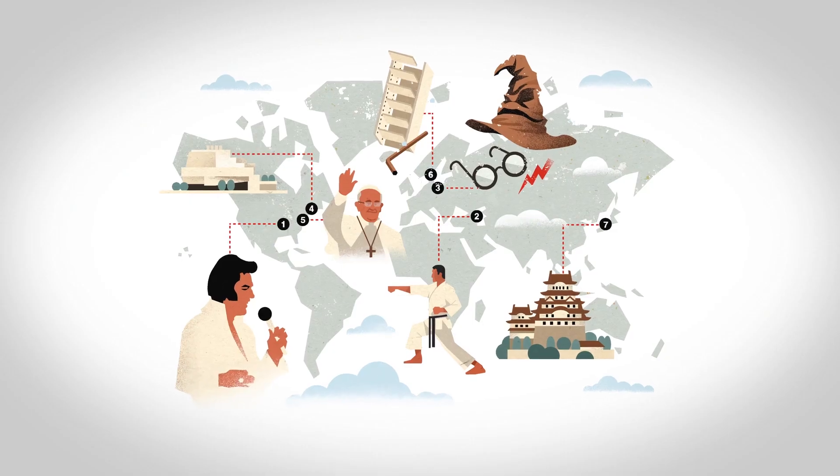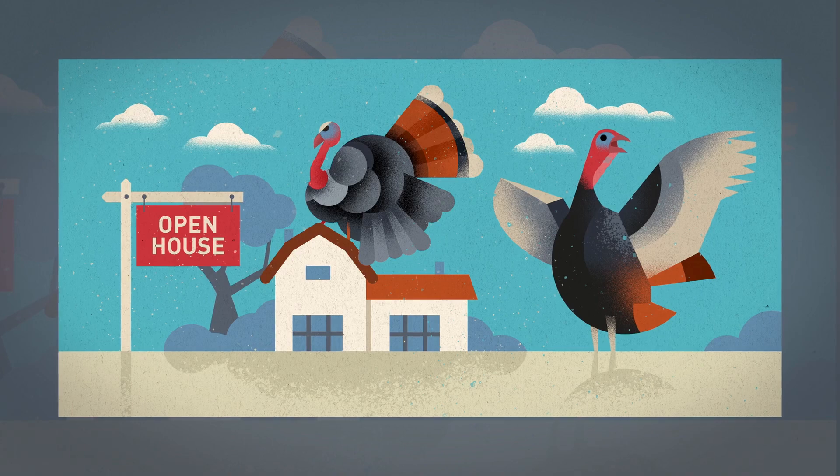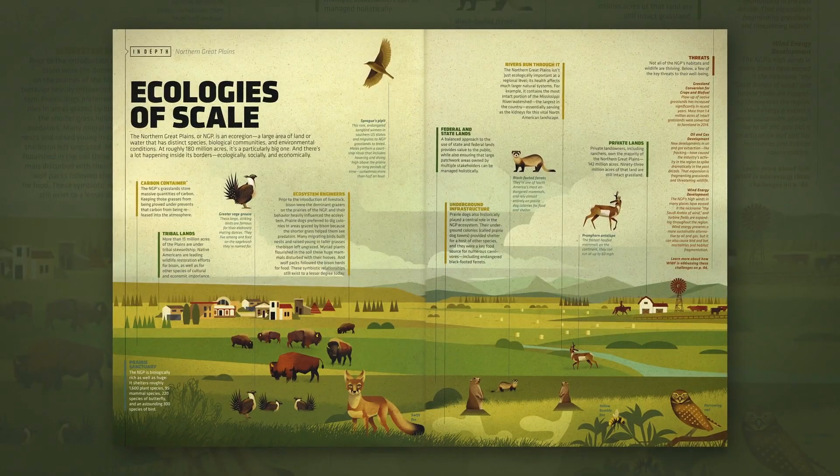Hello, my name is Dieter Braun. I'm an illustrator and a children's book author. You will find my work in Time Magazine, Wall Street Journal, H&M and WWF.